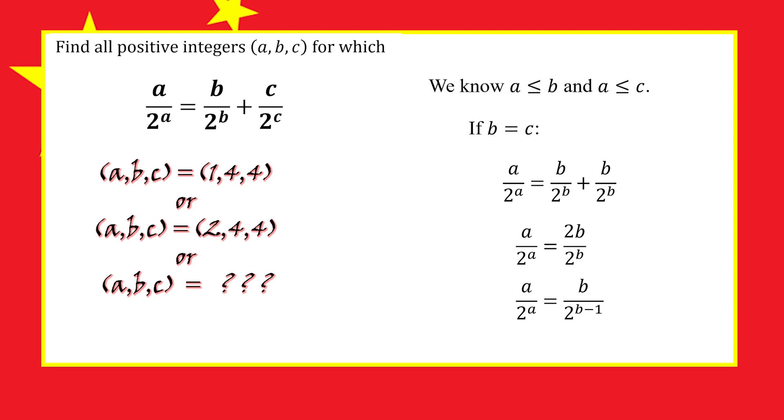Now, we can't have a equal to b because then a would also have to equal b minus 1, and we can't have b equal to b minus 1. So we must be able to cancel another factor of 2 from top and bottom.